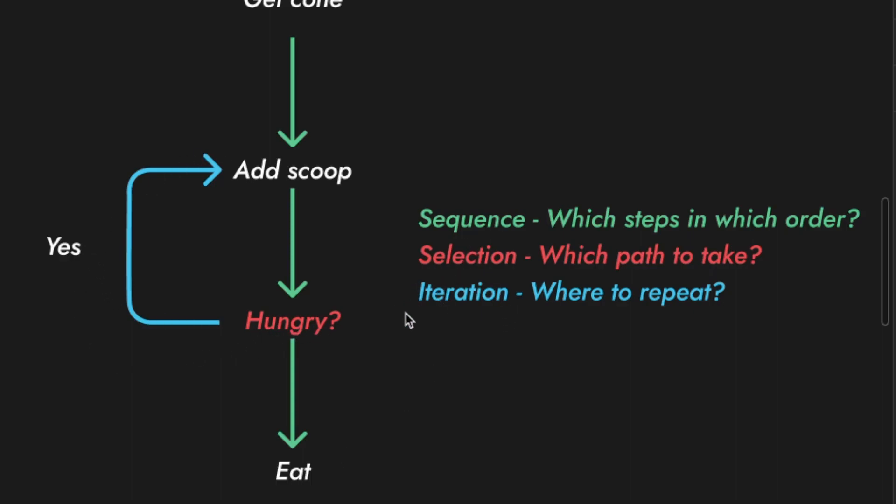And then iteration is repeating part of the algorithm multiple times. So here I'm just continually doing that until I'm satisfied that I won't be hungry.